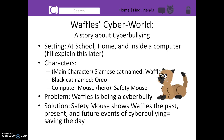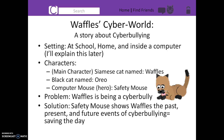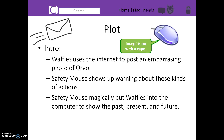It takes place at school, Waffles' home, and inside a computer. There are only three characters: Waffles, who is the main character, Oreo, and Super Mouse. In the beginning of the story, Waffles posts an embarrassing photo of Oreo online. That is when Safety Mouse shows up to warn Waffles about these kind of actions.